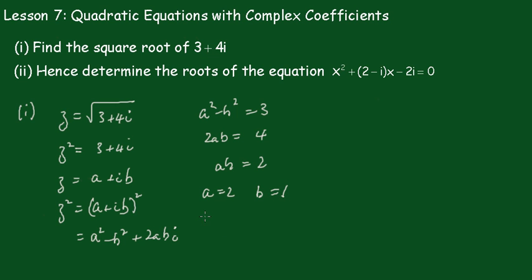And also a equals minus 2 and b equals minus 1 also works. So z equals 2 plus i, and z equals minus 2 minus i. And those are the solutions.